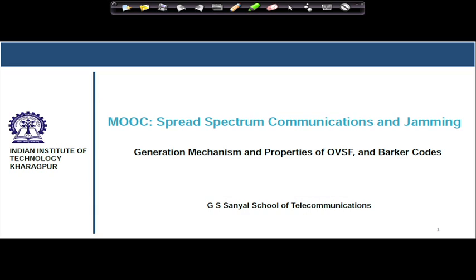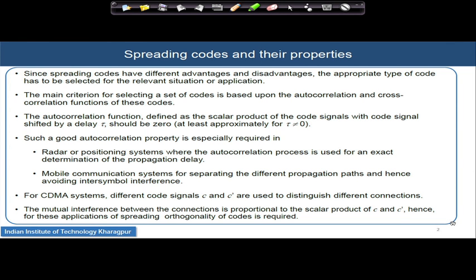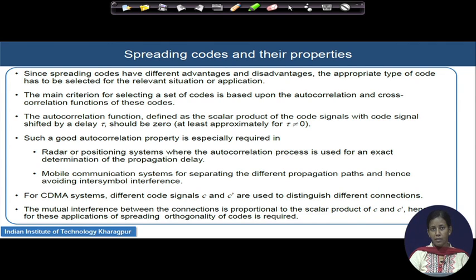Hello students. In continuation of the code generation mechanisms and their properties, today we will continue with the OVSF and the Barker codes. When we choose a code in practice for a typical application, we see different kinds of advantages and disadvantages involved, and the choice of code largely depends on two basic properties: autocorrelation and cross-correlation.